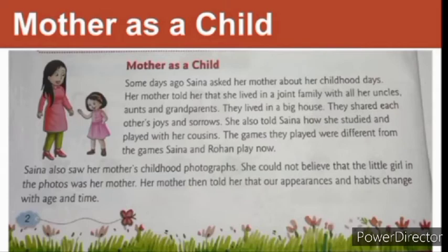Her mother told her that she lived in a joint family. Underline the word 'joint' — J-O-I-N-T. What is a joint family? A joint family is a family in which grandparents, parents, uncles, aunts and cousins live together in a single house. Joint family is a big family, also known as extended family.